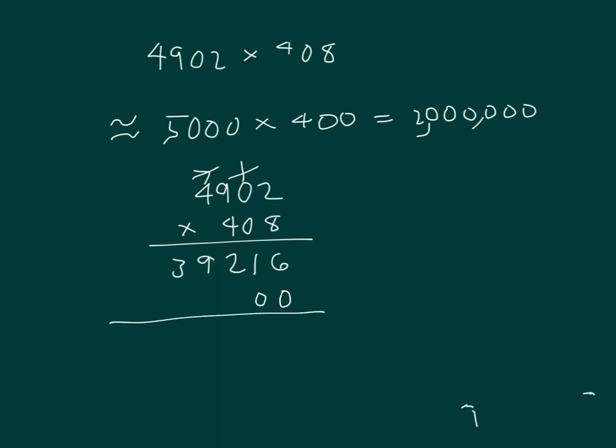4 times 2 is 8. 4 times 0 is 0. 4 times 9 is 36. 6, regroup of 3. 4 times 4 is 16, plus 3 is 19. And then I carefully add them together.